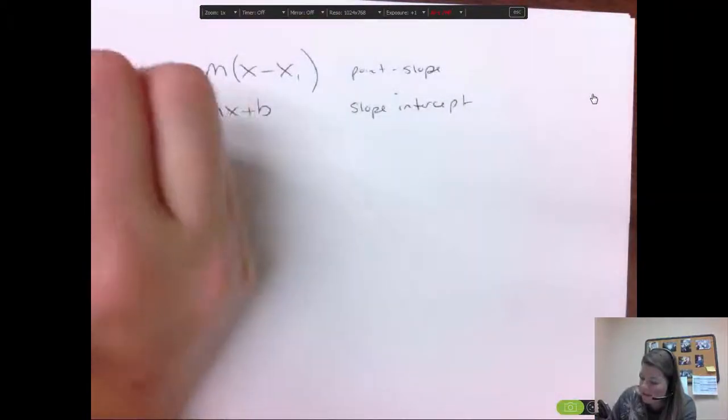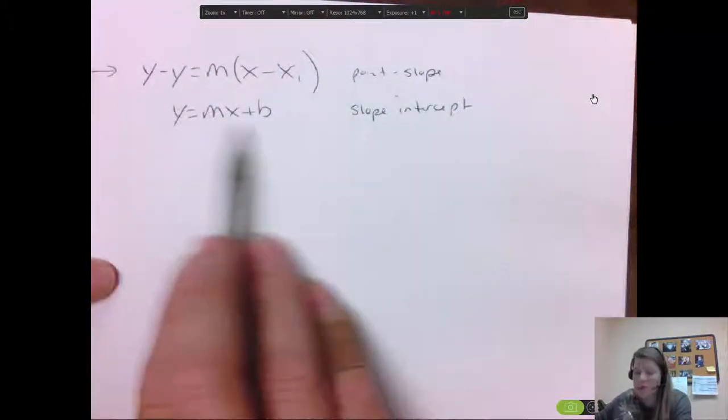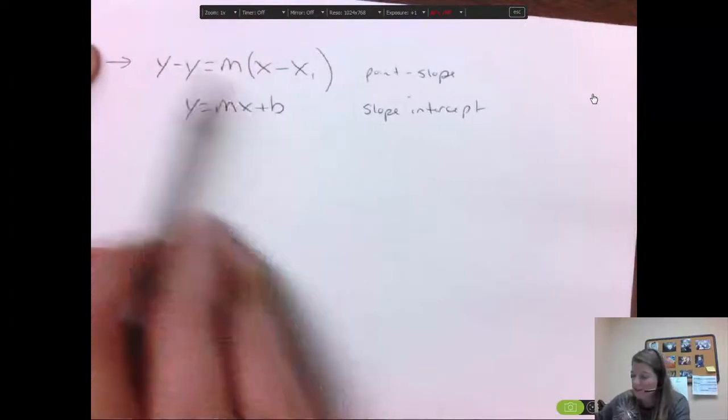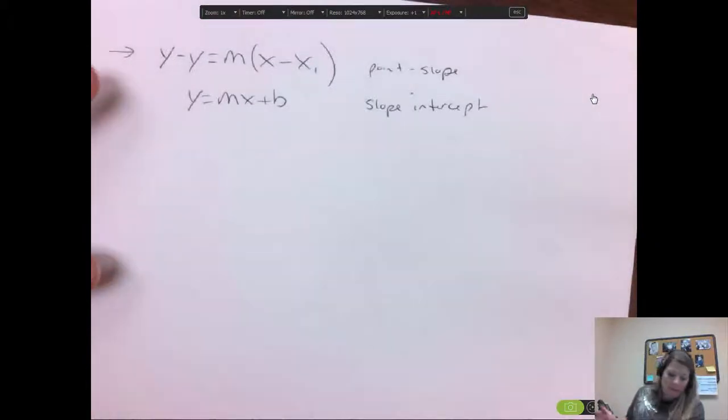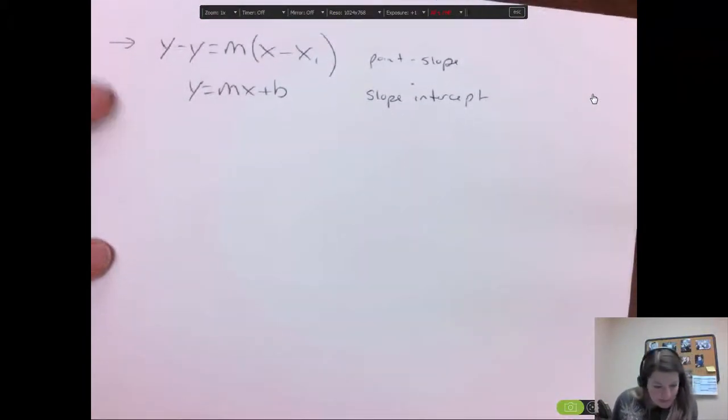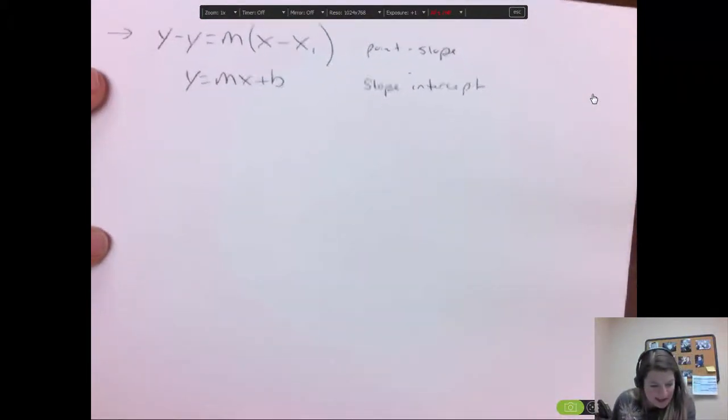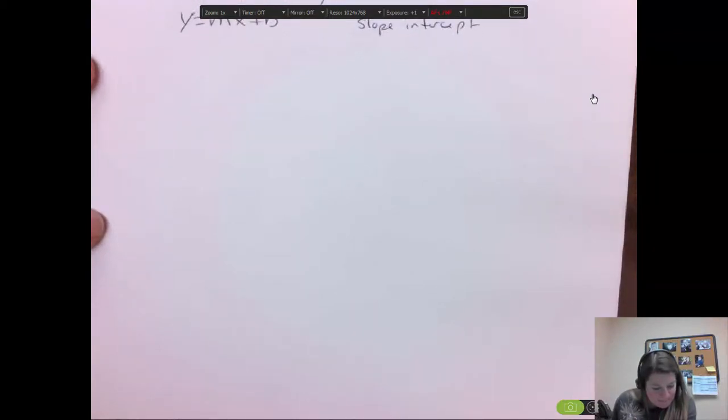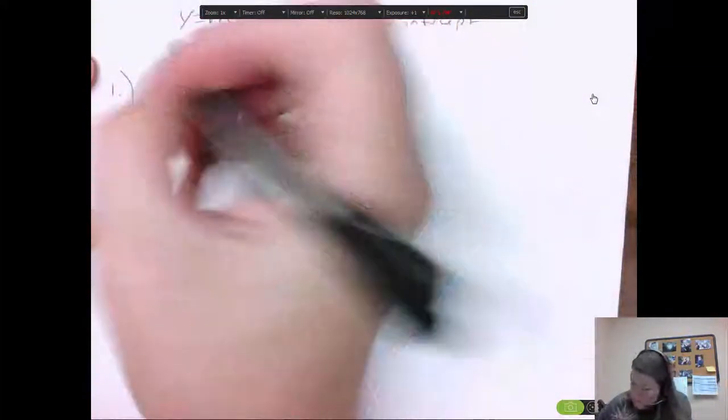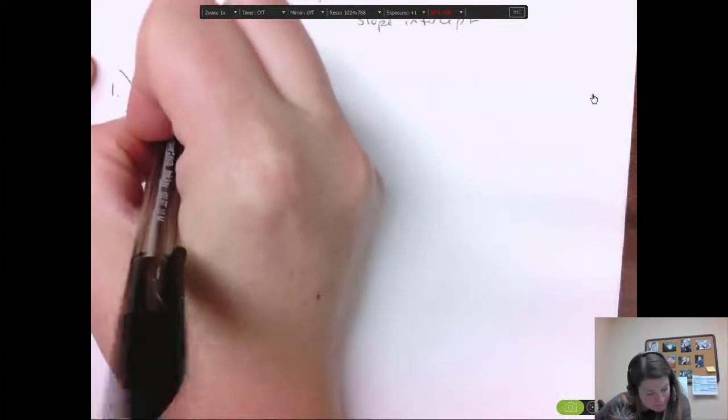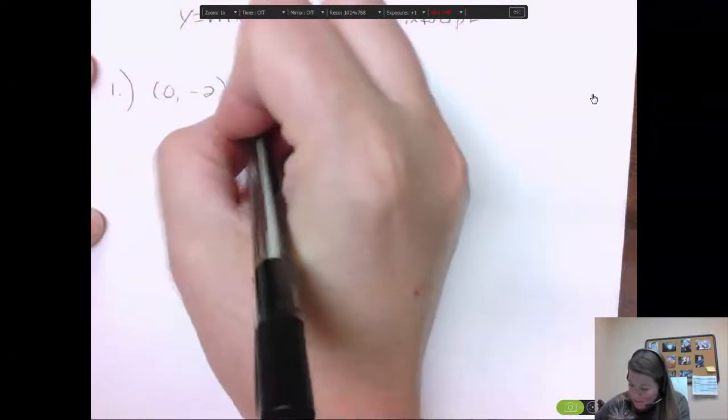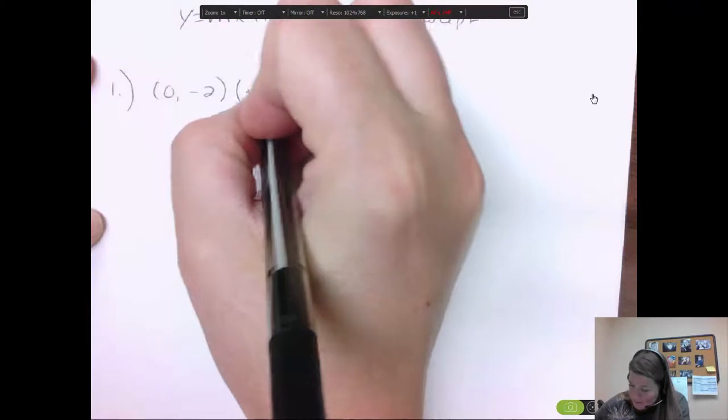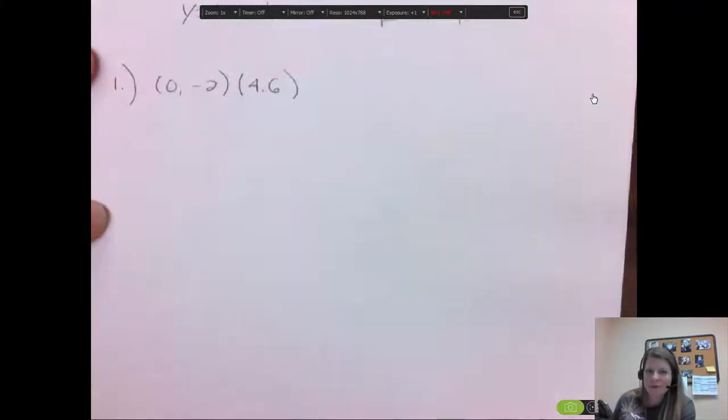I use point slope to write the equation in slope intercept form. So you use this to write your equation. You need a point and you need the slope. And for this example, what if I had the points (0, -2) and the point (4, 6)? So here's two points.